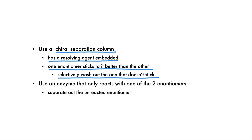Another way to separate enantiomers is to subject them to an enzyme which only reacts with one of the two enantiomers. It would then be easy to separate out the unreacted enantiomer in its pure form.